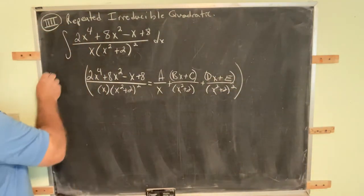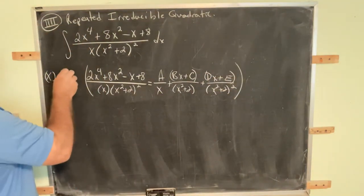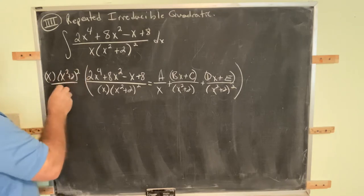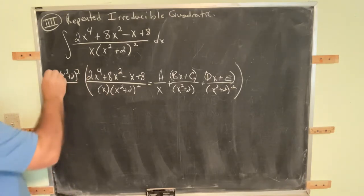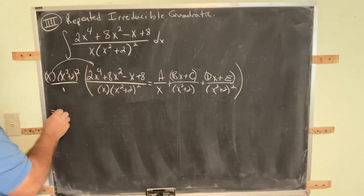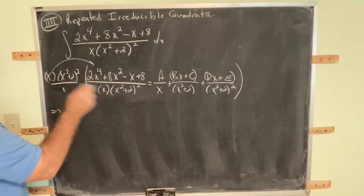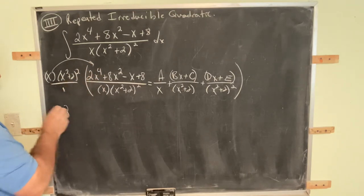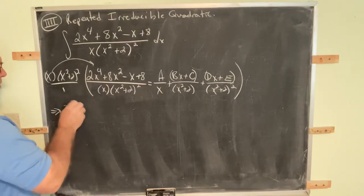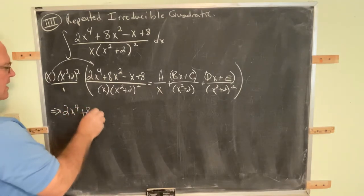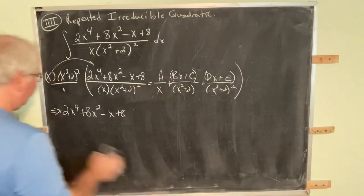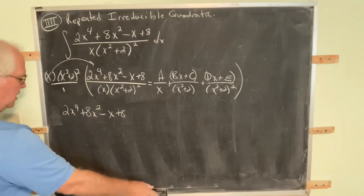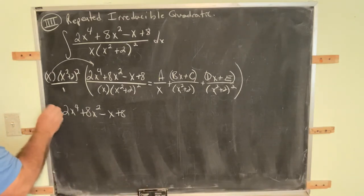Clear the fractions, multiply through by this common denominator. Even though it's a denominator, treat it like a numerator. On the left-hand side, as usual, everything cancels here, so all we're left with is just this numerator. So this implies 2x to the fourth, 8x to the second, minus x, plus 8. Notice there is no cube term. There is no x to the third term on the left-hand side. That coefficient is 0.